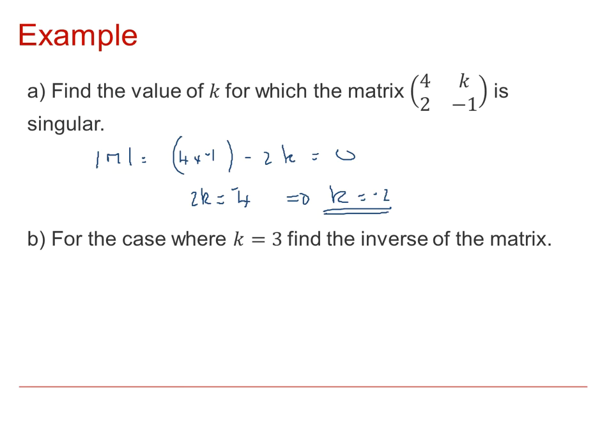We're then asked to find, when K is equal to 3, the inverse of the matrix. If K is equal to 3, our matrix is then equal to (4, 3; 2, -1). The determinant of M is therefore -4 minus 6, which is -10.